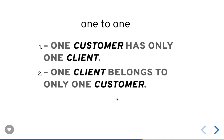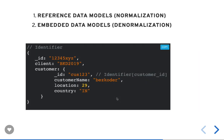In this video, we are first going to talk about one-to-one relationships. One-to-one means a client will have a customer and a customer belongs to a client. Another example is a user has a profile and a profile belongs to a single user. One customer has only one client, one client belongs to only one customer. How can we store this kind of data and architect our schema model in MongoDB to manage this information?